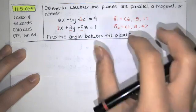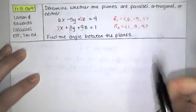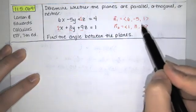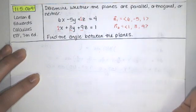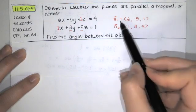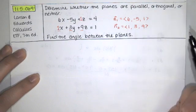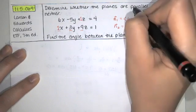Now we know that the planes are parallel if the normal vectors are parallel. That would mean that one of these vectors was a constant multiple of the other. This cannot be multiplied by a constant to get this, so they're not parallel.